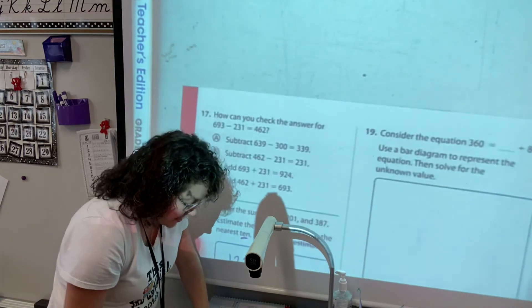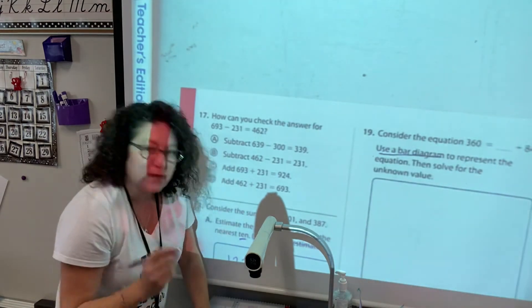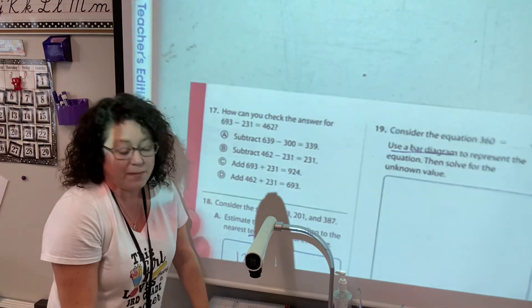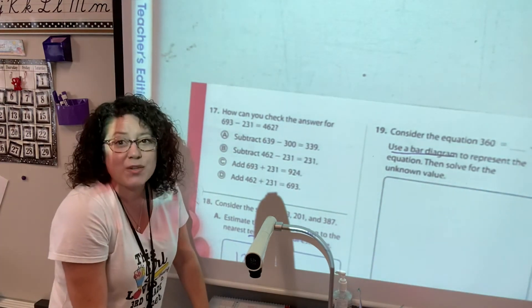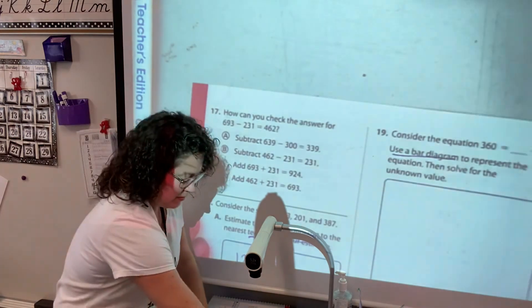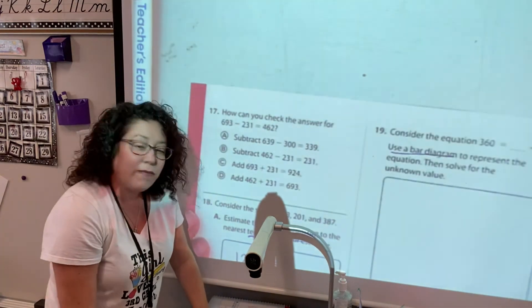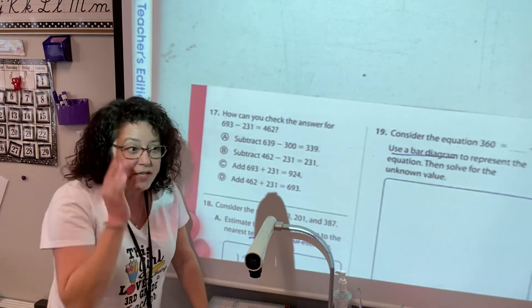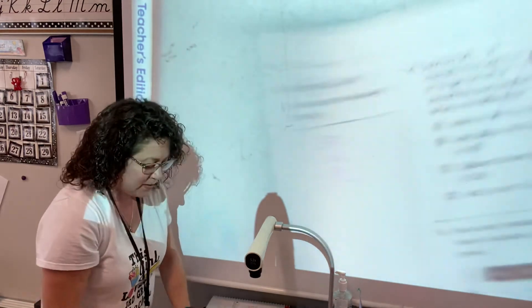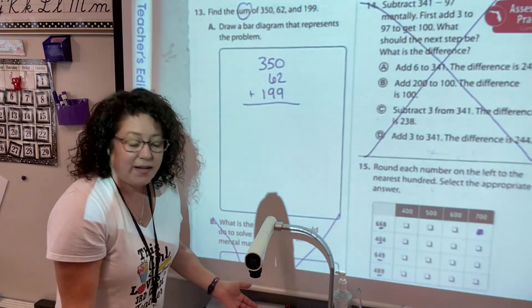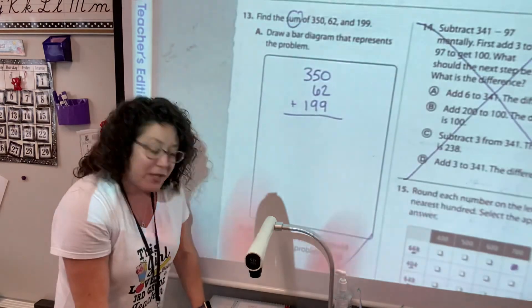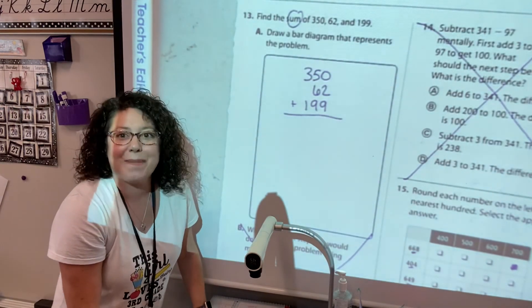And number 19 says use a bar diagram. Again, if you want to use a bar diagram, fine. If you do not like the bar diagram, that's fine too. Remember, everybody has their own strategy and you got to figure out what works for you, and that's okay. All right, so solve what you can. If you get stuck, just skip it, leave it blank. We're going to go over them all together. If you need help you can ask mom and dad. If they're busy, then just wait and we'll do it together. But solve what you can now, and then we're going to check back later.